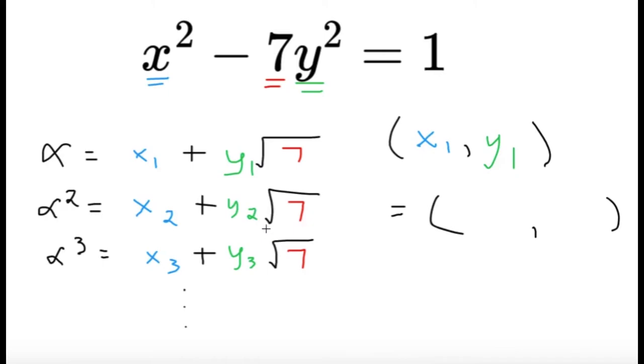Same for alpha cubed. If alpha cubed is x sub 3 plus y sub 3 square root of 7, then the solution is x sub 3 and y sub 3.